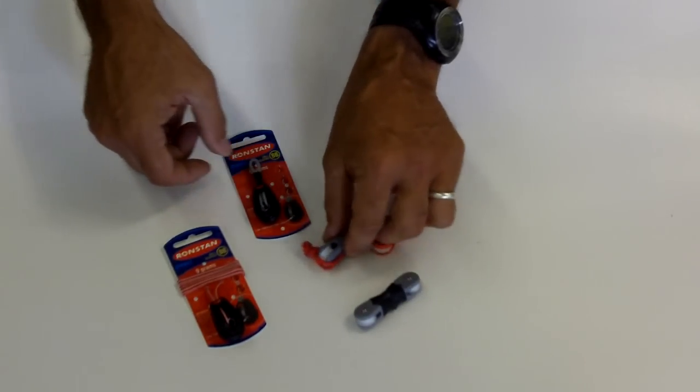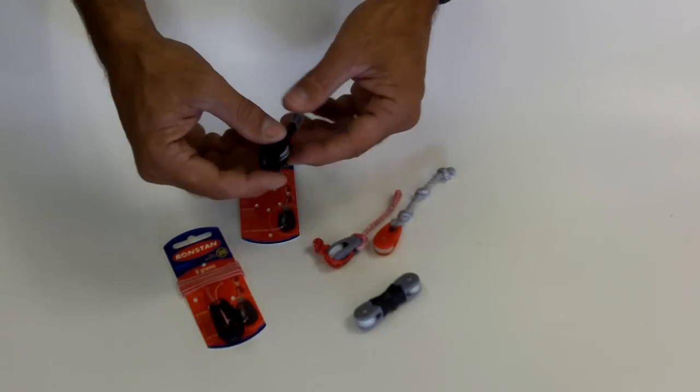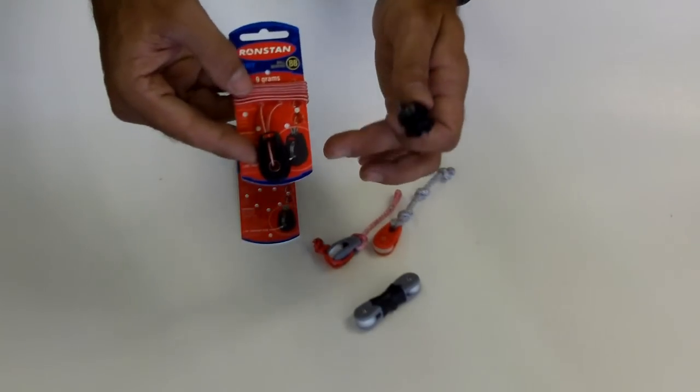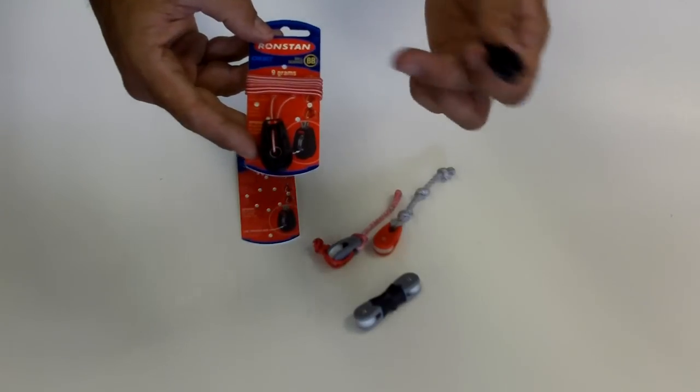Now the new block that we want to describe is the one from Ronstan, the new Orbit block. As you can see, this is how it's packaged. It comes with a pulley and comes with a line which you can tie on.